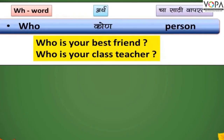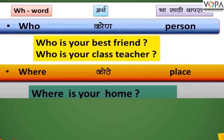WHO is used to ask about a person. For example: Who is your best friend? Tuze best friend kon aahe? Who is your class teacher? Tuze class teacher kon aahe? WHERE is used to ask about a place or location. For example: Where is your home? Tuze ghar kuthe aahe?